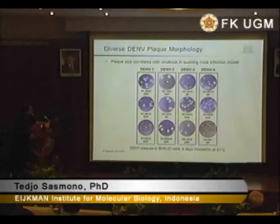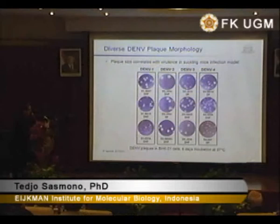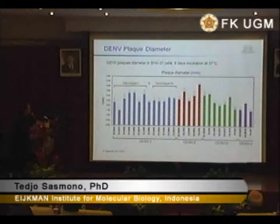We performed plaque assays on BHK21 cell lines to look at plaque morphology and plaque size. These are some representative plaque morphologies of dengue viruses from Indonesia. Dengue 1 is quite diverse — with big, medium, and small plaques. Dengue 2 tends to have very big plaques. Dengue 3 is quite diverse as well.